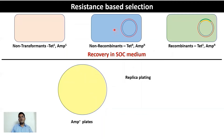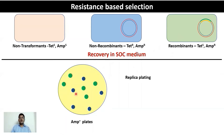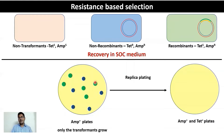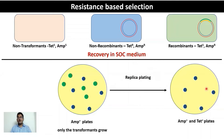To identify true recombinant cells, first plate the transformation mix onto an ampicillin-positive plate. All ampicillin-sensitive non-transformants die off, leaving only non-recombinant and recombinant transformants. Then do a replica plating onto a plate with both ampicillin and tetracycline. Since recombinants are tetracycline sensitive, only the non-recombinant blue colonies grow here; recombinant cells do not grow.